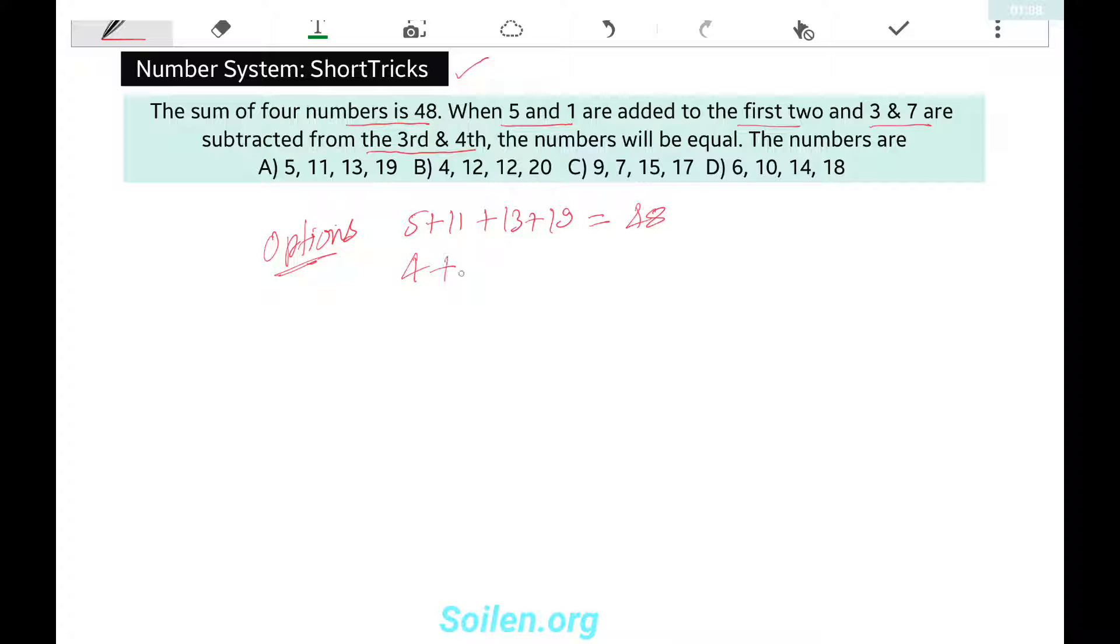4, 12, 12, and 20—sum is 48. Generally, the sum of all will be equal, so it will not give you the answer.